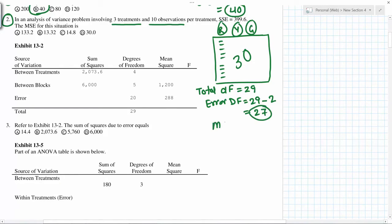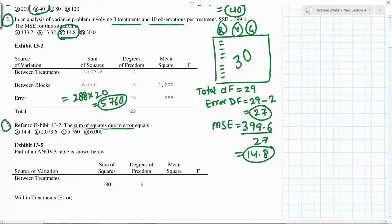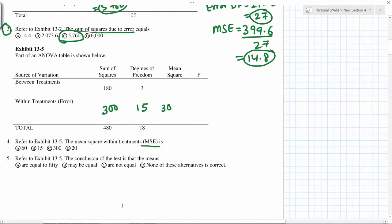27. So mean square error will be sum of squares due to error, so this will be 288 times 20. This becomes 180 divided by 3 is 60 and this becomes 60 divided by 20 is 3.